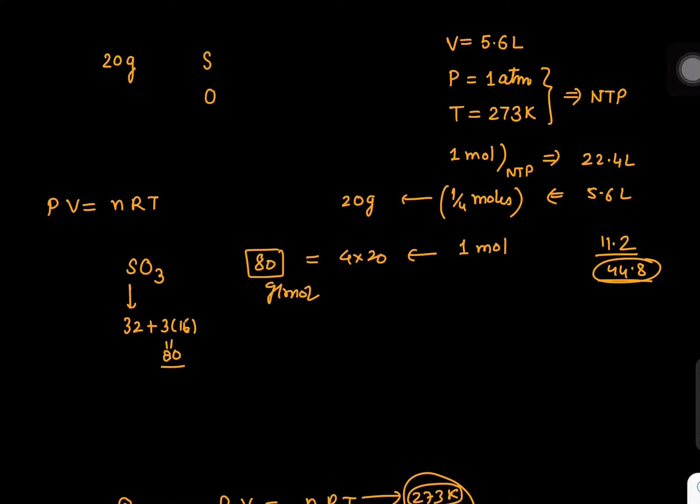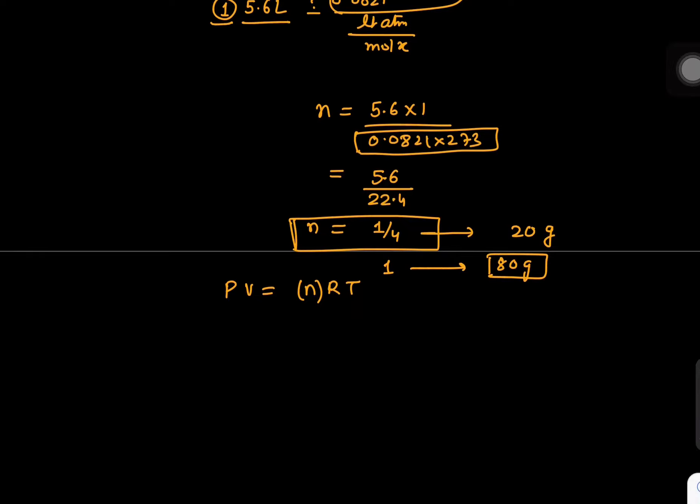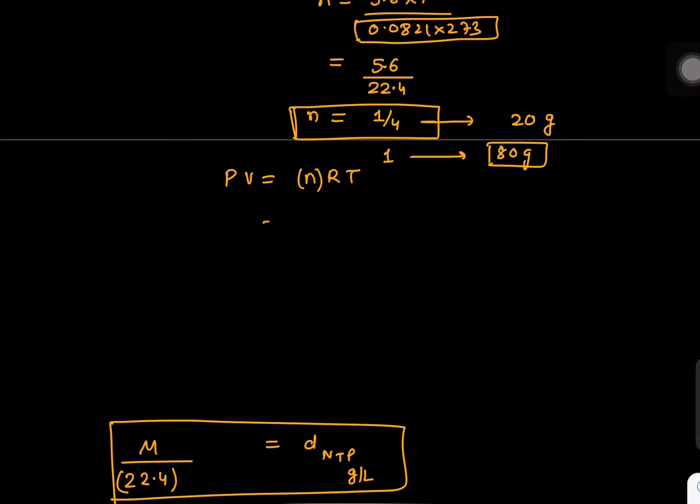One more thing we can learn: PV equals nRT can also be written as PV equals W by M RT, which is weight by molecular weight. Sending volume to the other side, it becomes W by V equals RT by M.